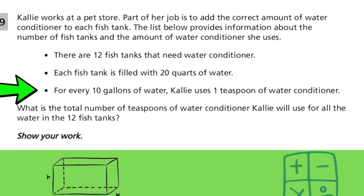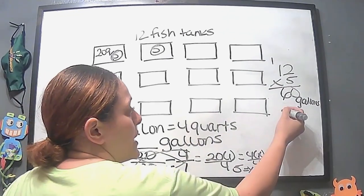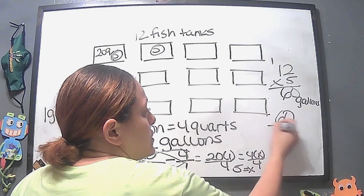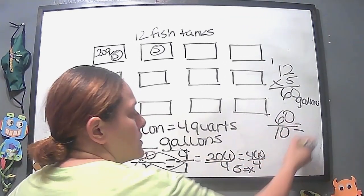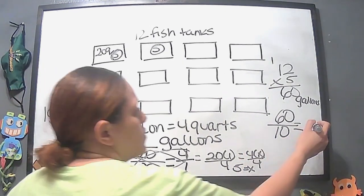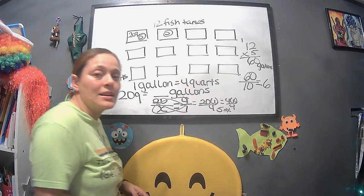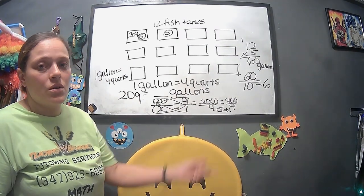The next part, it says, for every 10 gallons, she uses 1 teaspoon for the conditioner. So what does that mean? Well, that means that the operation we're going to have to do is division. So we're going to have to divide 60 by 10, right? And then what does that give us? Well, 60 divided by 10 would be 6, and that means that she would use 6 teaspoons to condition all the fish tanks.